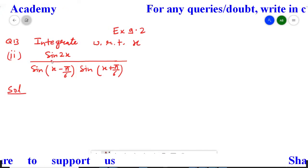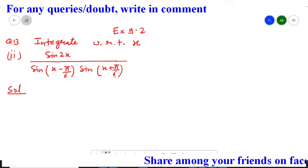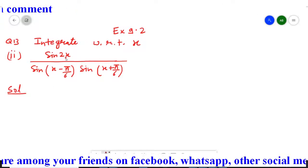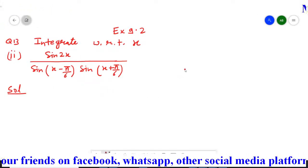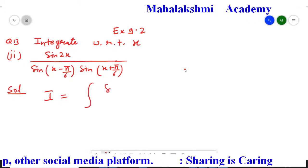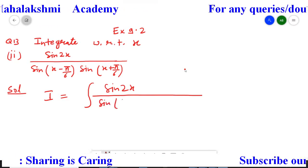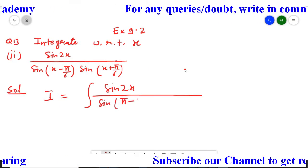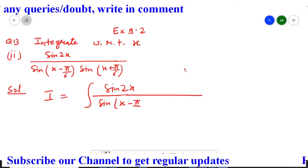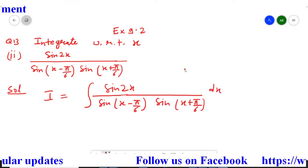In the second part, the given function is sin 2x divided by sin(x - π/6) multiplied by sin(x + π/6). To integrate these kinds of questions, whatever angles you have in the denominator, you have to create the same angles in the numerator. I am going to assume the integration of the required function as I. So I = integration of sin 2x divided by sin(x - π/6) multiplied by sin(x + π/6) dx.